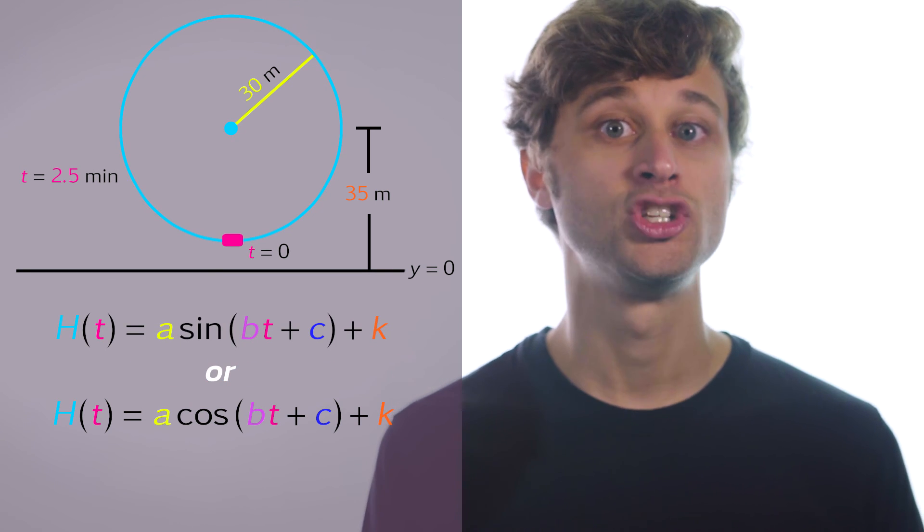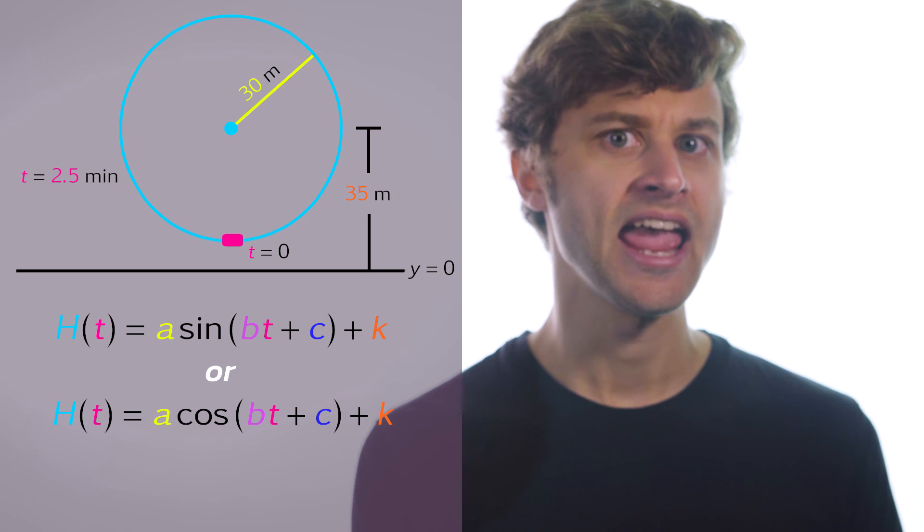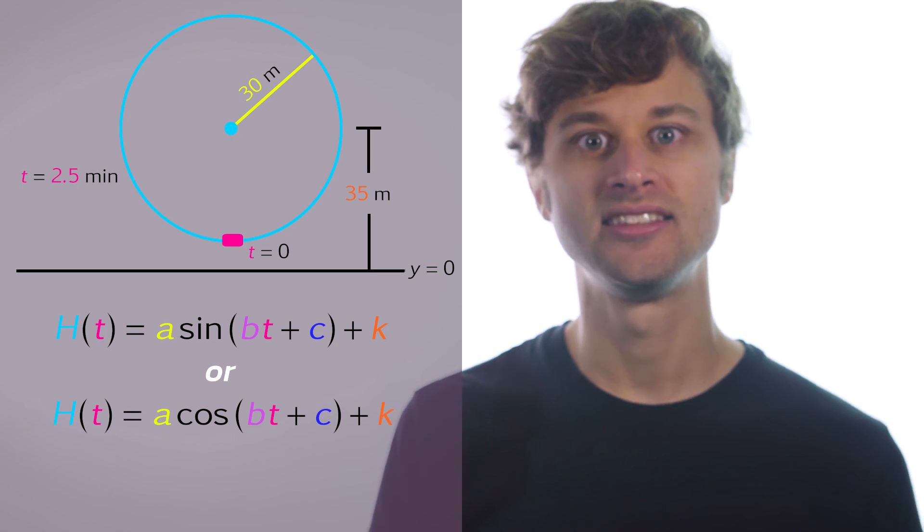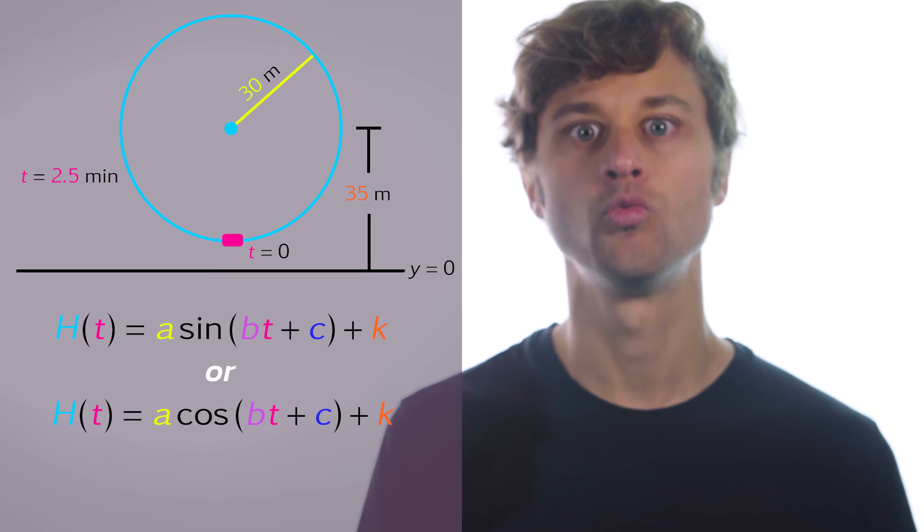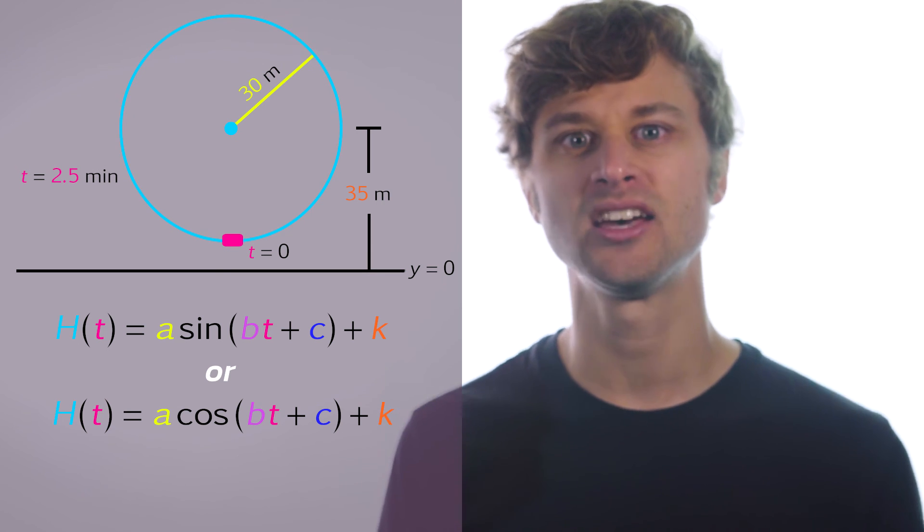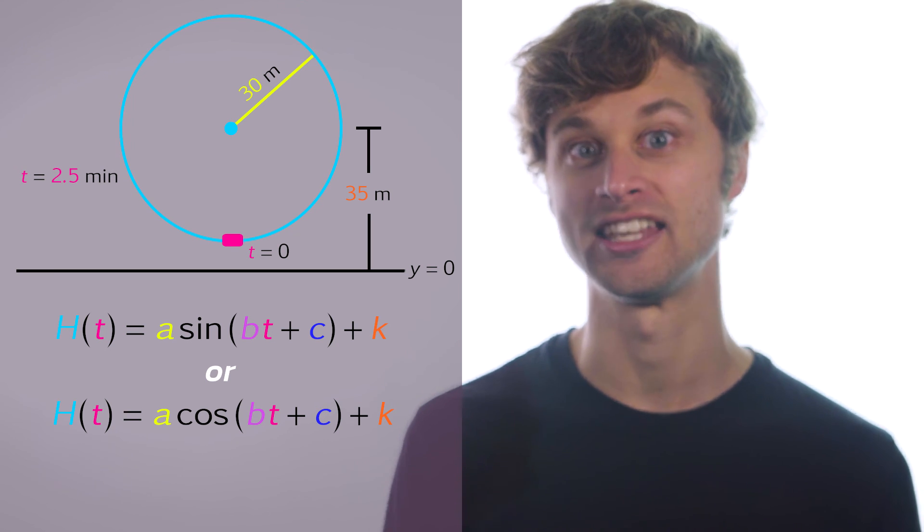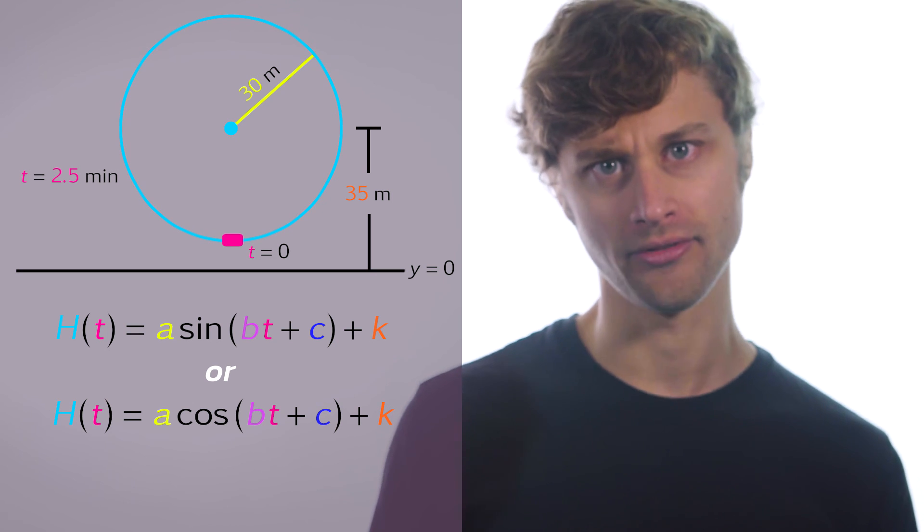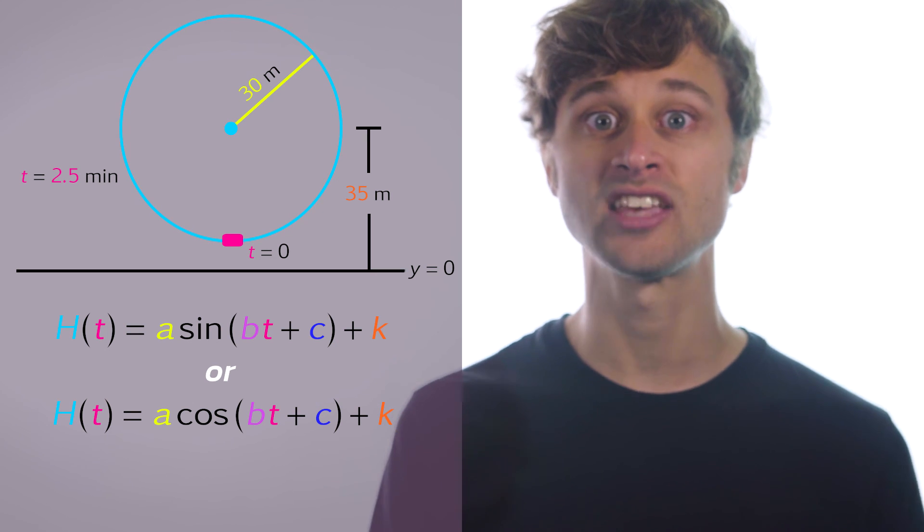If neither of those things is true, then what I do is I plot that initial point h equals negative c over b, and then I try to figure out which function is going to be most useful. But in this case, because we are starting the clock when the person gets on the Ferris wheel at t equals zero, we don't really need to worry about this.